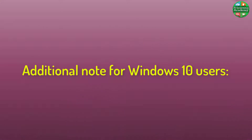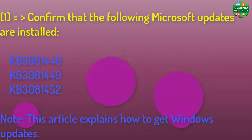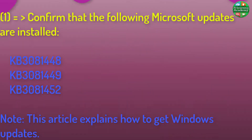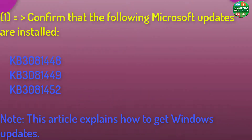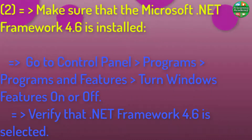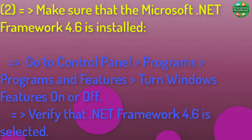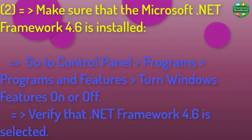Additional note for Windows 10 users. Step 1: Confirm that the following Microsoft updates are installed. Note: This article explains how to get Windows updates. Step 2: Make sure that Microsoft .NET Framework 4.6 is installed. Go to Control Panel > Programs > Programs and Features > Turn Windows Features on or off, and verify that .NET Framework 4.6 is selected.